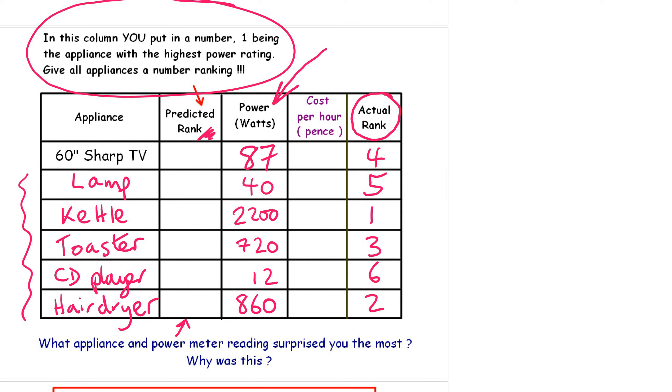I am now going to add the cost of using each appliance for one hour. Can you please add in the cost for using each appliance for one whole hour? It shouldn't surprise you that the kettle, because it was the most energy hungry, costs the most amount to use: 30.8 pence if you have the kettle on for one hour, whereas the CD player is 0.2 pence to play it for one hour. That's one-fifth of 1p. That's not very much money.